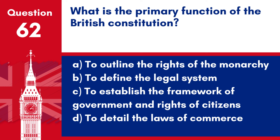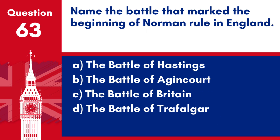Answer: c. To establish the framework of government and rights of citizens. The British Constitution, which is unwritten, sets out how the country is governed and protects the rights and freedoms of its citizens.